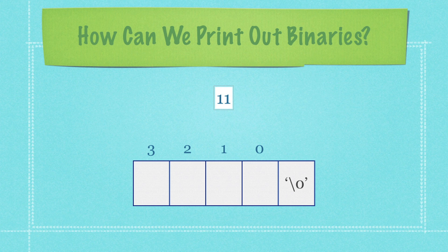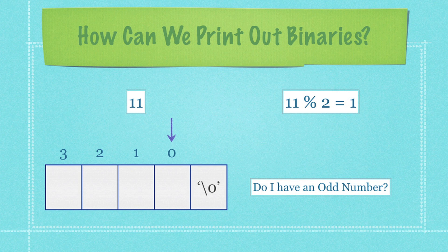Now, how are we going to print out binary numbers? I'll create a function that converts base 10 numbers to binary. Let's say our base 10 number is 11. To convert it, I'll create a character array with a null value at the end — this is essentially a buffer. There's a neat way to convert to pretty much any base using the modulus operator. If you take your base 10 number and apply modulus by the base you want to convert into, it provides the digit you need. For binary, that will be either a 1 or a 0 — essentially asking: do I have an odd number?